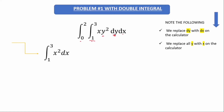So we have the y part, which goes with y squared, and the interval is from one to three. But remember the rule: we replace dy with dx and y with x on the calculator. So y squared dy becomes x squared dx with the interval from one to three. Then multiplying by the second part — x dx — with the interval from zero to two. Once separated, you go to your calculator.